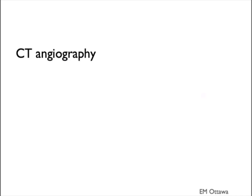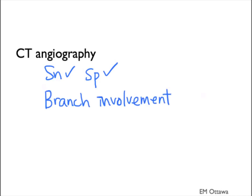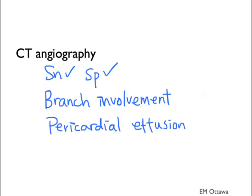CT angiography has high sensitivity and specificity for picking up aortic dissection. It can easily tell us the extent of the dissection and what other branches are involved. It will also demonstrate pericardial effusion. The downside, of course, is that the patient needs to be stable for every CT scan. It also requires IV contrast, and radiation is involved.